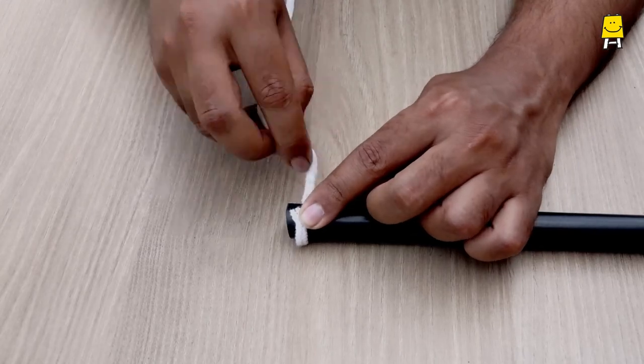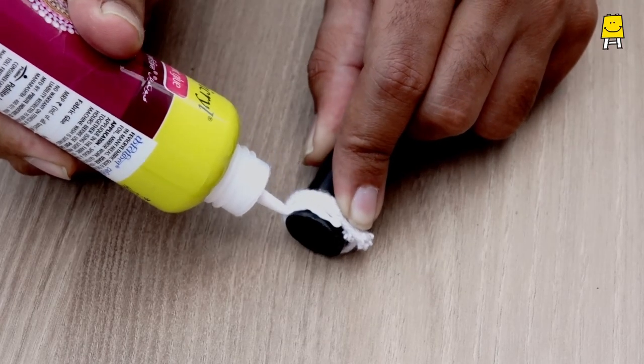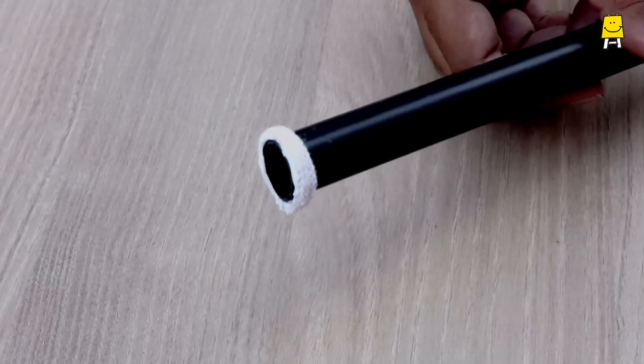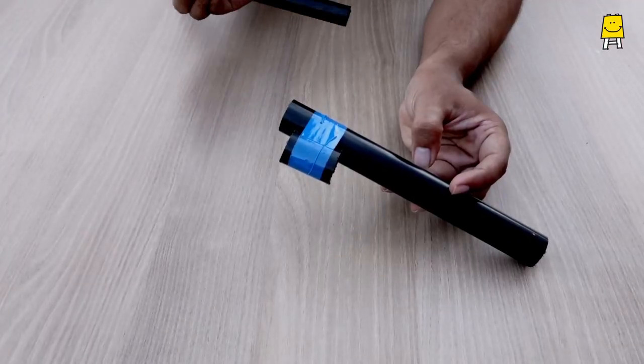On the smaller pipe, wrap a thread along one end and secure it with glue. The end result should look like this. Put the smaller pipe into B.